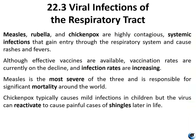Measles, rubella, and chicken pox are all very contagious and systemic viral infections. They are not always associated with the respiratory tract, but they gain entry to the body through the respiratory system before eventually causing rashes and fevers. Effective vaccines are available for all three, but vaccination rates are on the decline, which means infection rates are increasing. Of these three diseases, measles is the most severe, and we're seeing a very scary uptick of measles infections in the U.S. Measles is absolutely fatal in several cases and should be treated as a very serious respiratory disease.